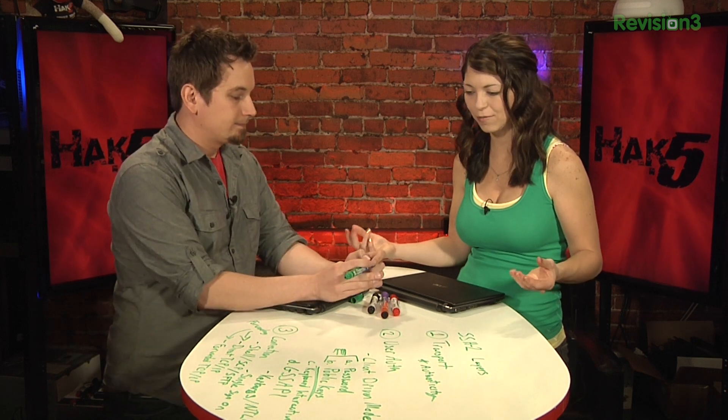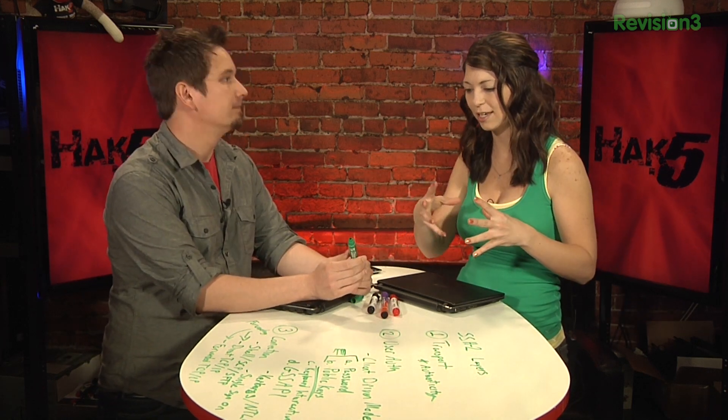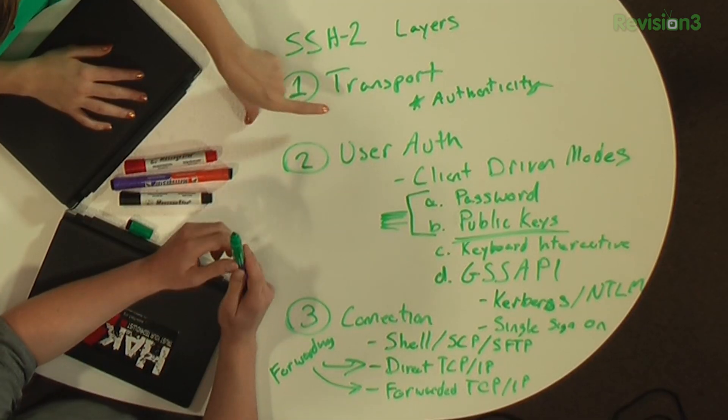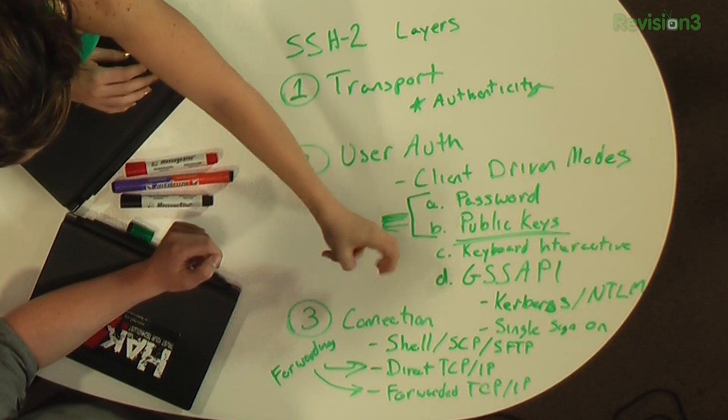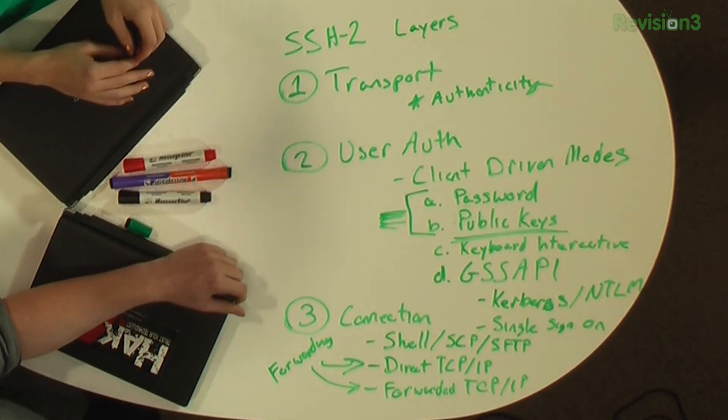Those are the three different layers of SSH2: the transport, user authentication, and connection layers. It's kind of like three different people working on the same project to get you, in the end, connected to the server — your server authentication, your user, and the tunnels. When we get back, we're going to be talking about the authentication layer and how we can use asymmetric key cryptography — AKA public key cryptography — to do our authentication.